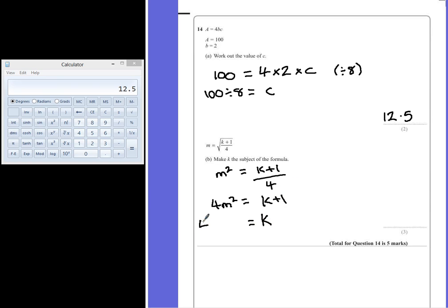So on the left hand side we have 4M squared minus 1, making K the subject of our formula.